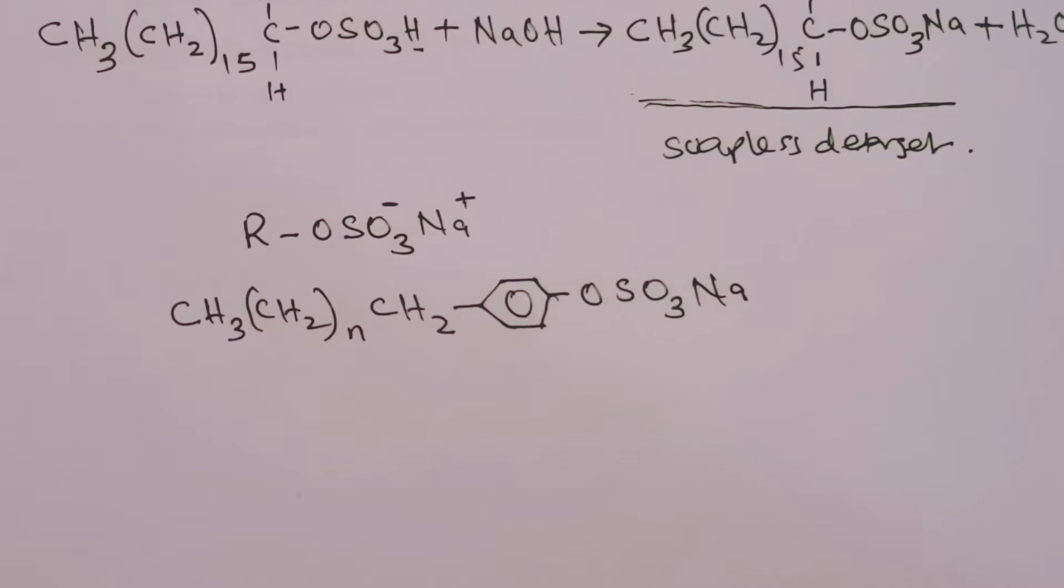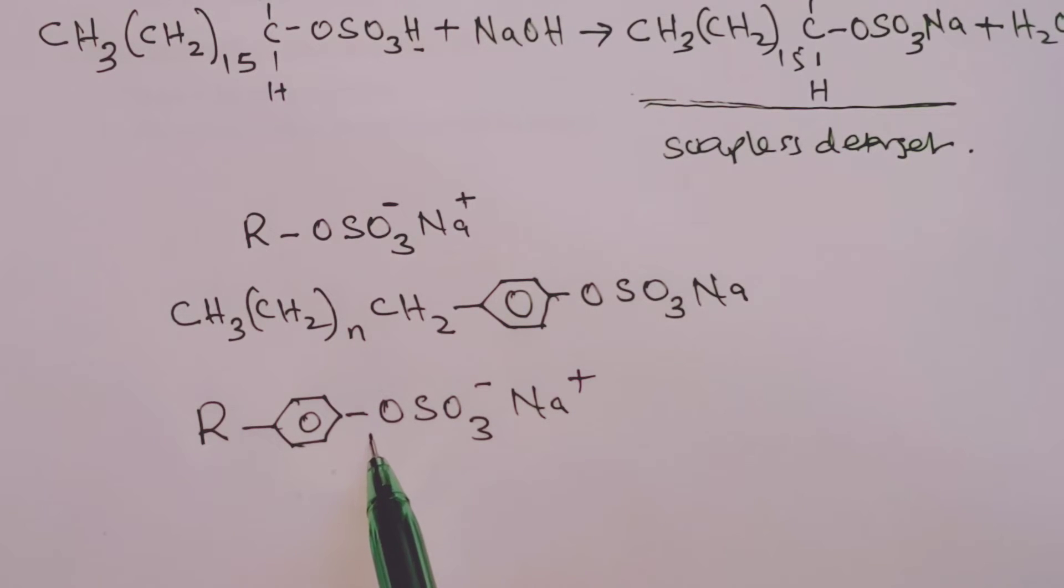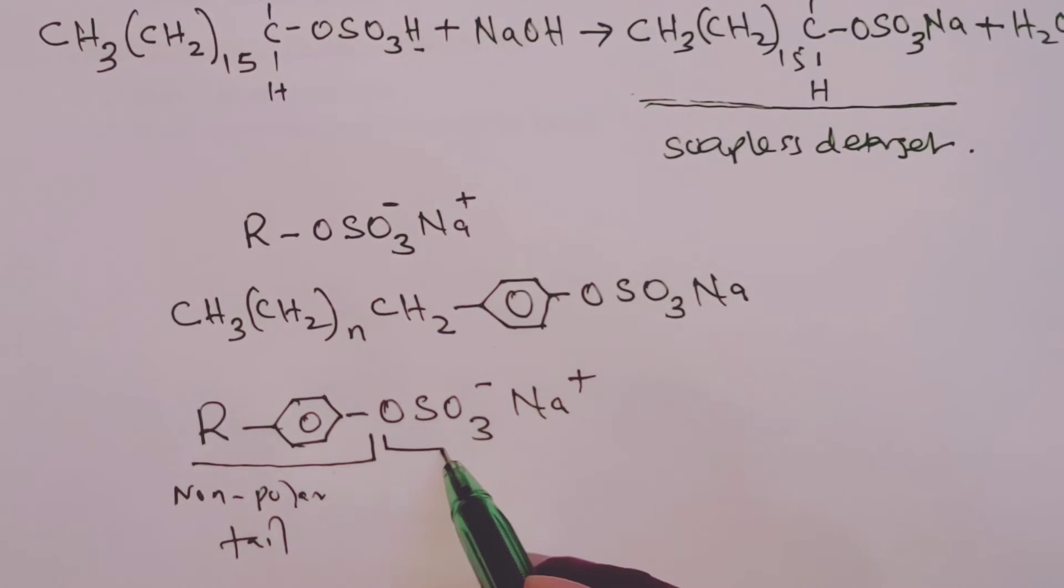Now, this new structure will then be represented as R, then the benzene ring, followed by OSO3- and then Na+. When we will be talking about the mode of action, we shall realize that the benzene ring together with the hydrocarbon chain forms what we call the non-polar tail, and then this other part would be the polar head.